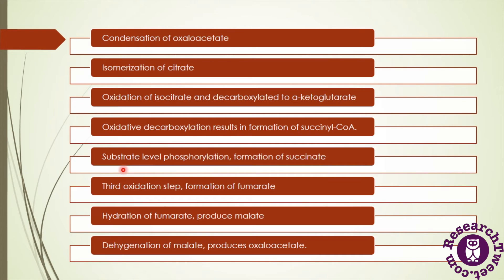In the fifth step, substrate-level phosphorylation occurs, resulting in the formation of succinate and release of energy. In the sixth step, the third oxidation step, fumarate is produced, catalyzed by succinate dehydrogenase — malonate acts as an inhibitor for this step. In the seventh step, hydration of fumarate occurs to produce malate in the presence of fumarase. In the eighth and final oxidation step, the carbon hydroxyl group is converted into a carbonyl group, regenerating oxaloacetate for use in the next cycle, catalyzed by malate dehydrogenase.